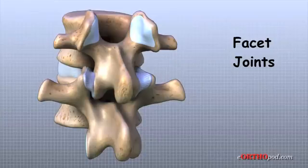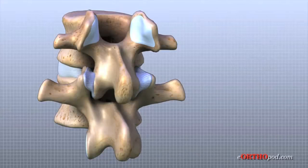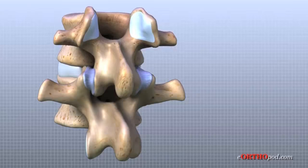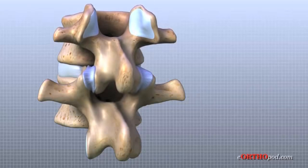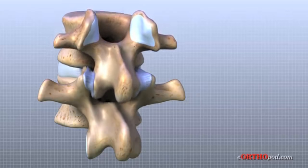A facet joint is a small bony knob that sticks out from the vertebral body at the back of the lumbar spine. Where these knobs meet, they form a synovial joint that connects the two vertebrae. The facet joints of the lumbar spine move together in a sliding motion as you bend forward and backward.